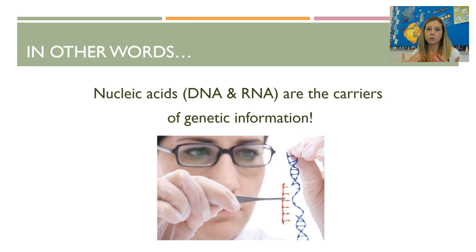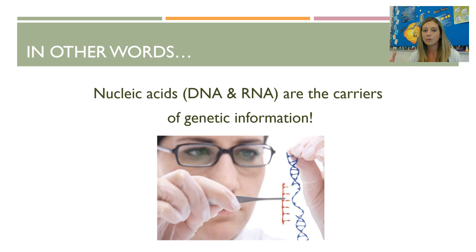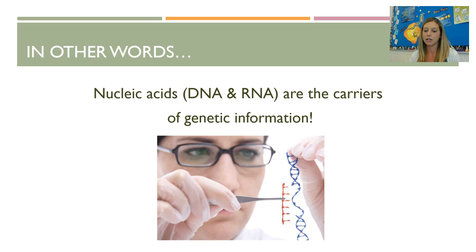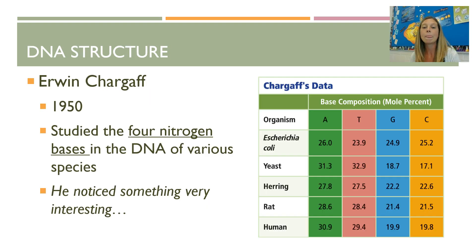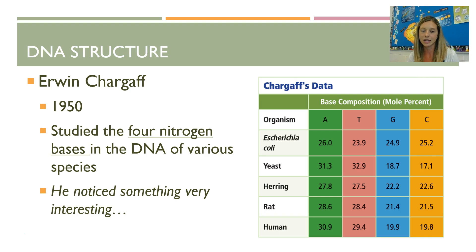So nucleic acids — DNA and RNA — are the carriers of genetic information. That's actually kind of surprising because DNA is pretty simple, whereas proteins are huge, complex, and numerous, so scientists were convinced it had to be proteins. But we know it's DNA. Now that we know this is the super important molecule, how did we figure out its structure?